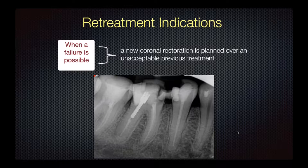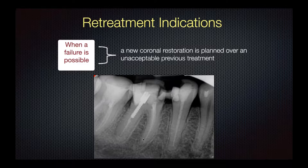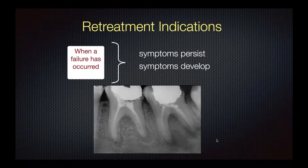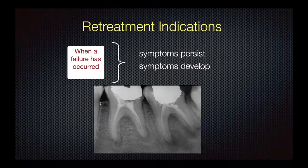Let's look at when we should and shouldn't do a retreatment. Number one, you do a retreatment when, even though there's no apical periodontitis, we need to redo the crown of the tooth. In that case, we worry about introducing microbes and disrupting any seal we have, so we do a preventative root canal and then restore the tooth. As I said, if you have no apical periodontitis, the prognosis is excellent. When there are symptoms or a definite lesion and you have a poor root canal, then we would do a retreatment before restoring these teeth.